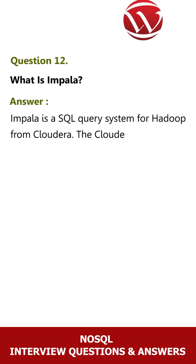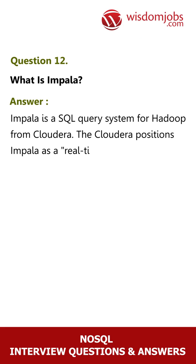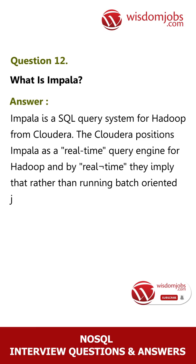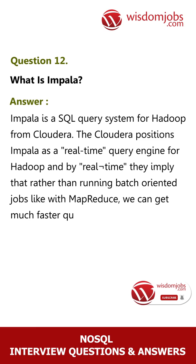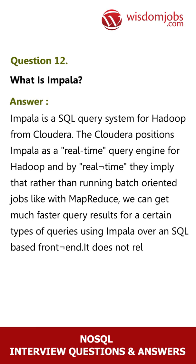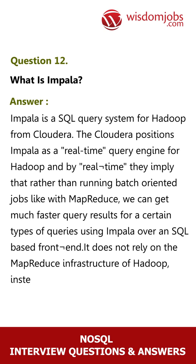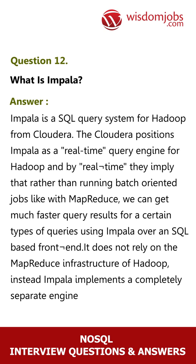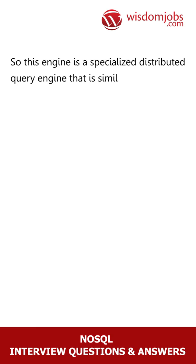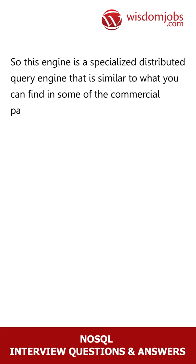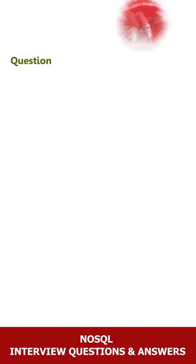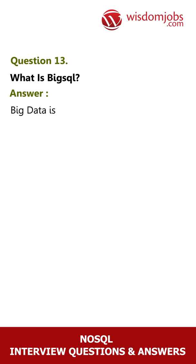Question 12: What is Impala? Answer: Impala is a SQL query system for Hadoop from Cloudera. Cloudera positions Impala as a real-time query engine for Hadoop — by real-time they imply that rather than running batch-oriented jobs like with MapReduce, we can get much faster query results for certain types of queries using Impala over a SQL-based front end. Impala does not rely on the MapReduce infrastructure of Hadoop. Instead, Impala implements a completely separate, specialized distributed query engine similar to what you find in some commercial parallel relational databases — in essence, it bypasses MapReduce.